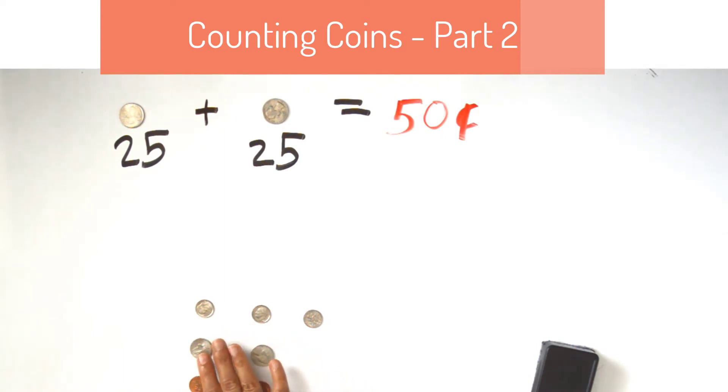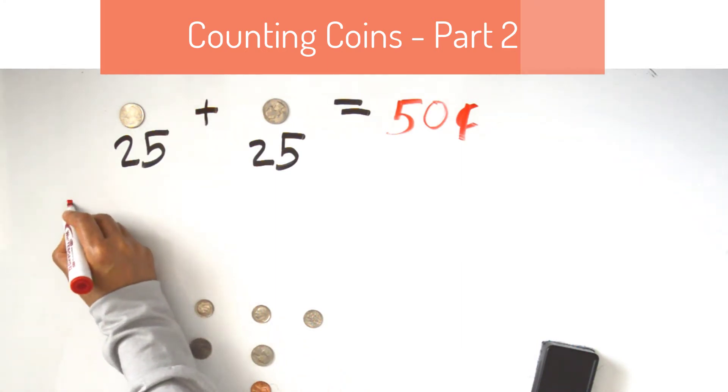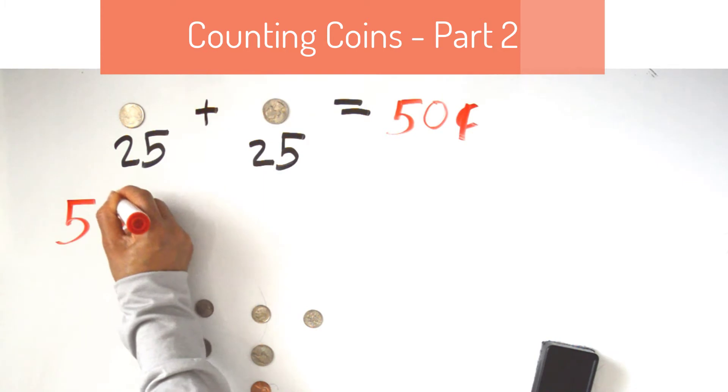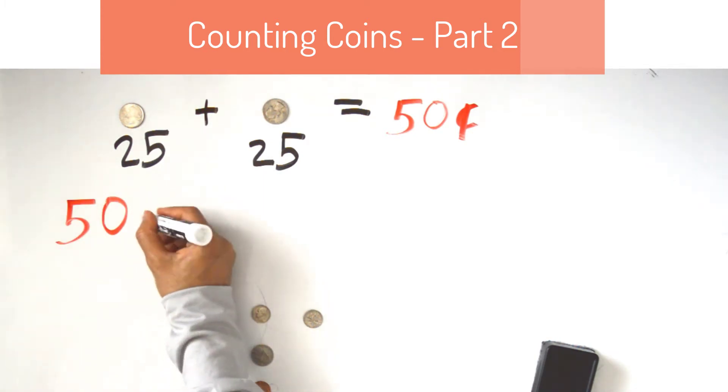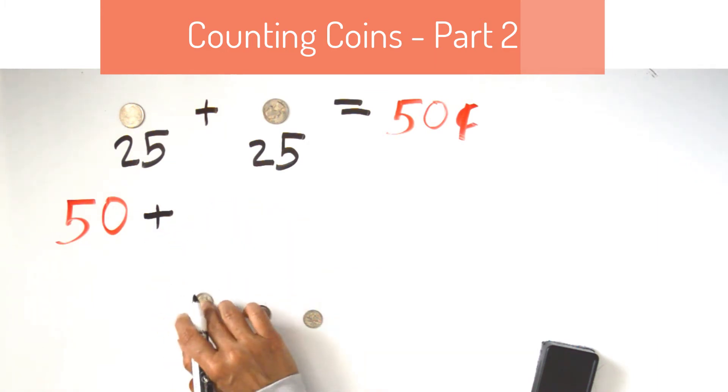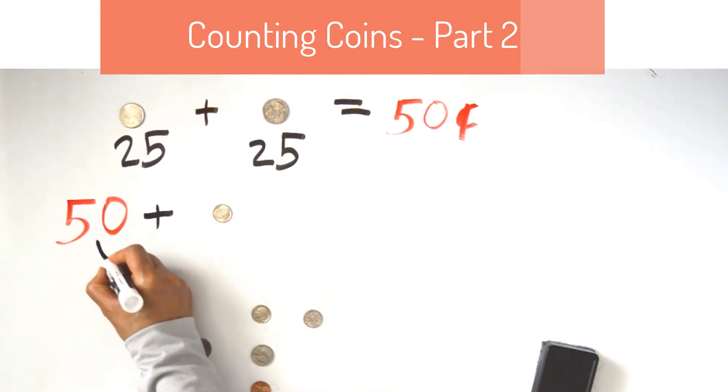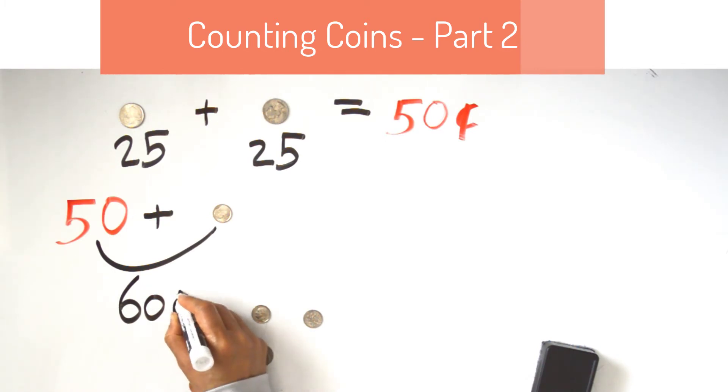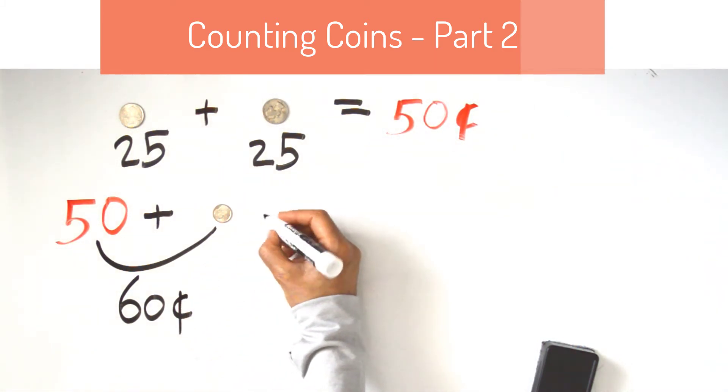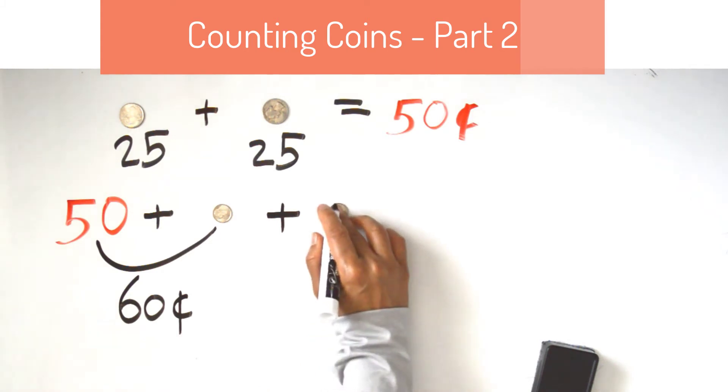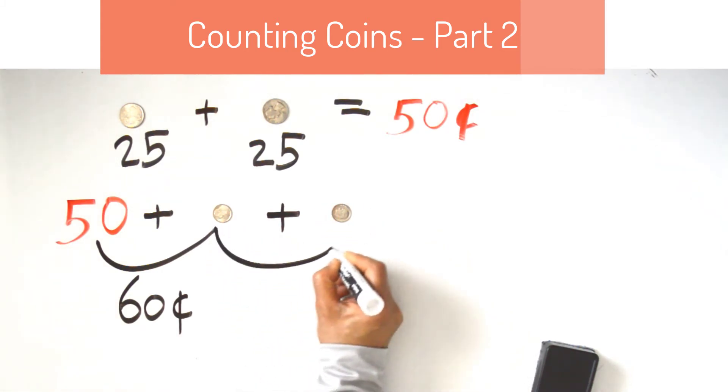Now let's add dimes. Each dime is worth 10 cents, so we will count by 10. 50 plus 10 more equals 60 cents. 60 plus 10 more equals 70 cents.